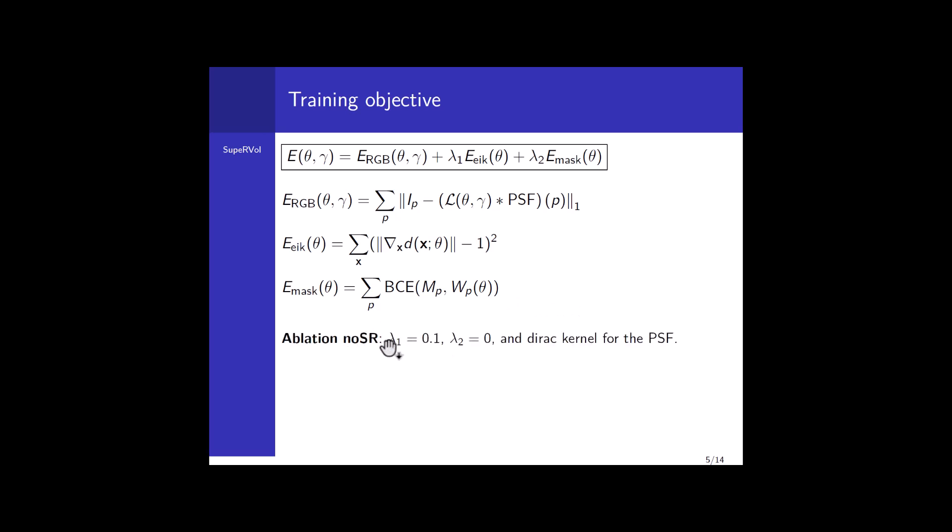We consider two versions of our framework: one ablation called no-SR, and our full framework with a Gaussian kernel for the PSF. For our full framework, we decided to incorporate this optional mask loss to reduce significantly the computational cost. For this reason, we use no-SR to obtain the masks and to initialize the geometric and material parameters. In the case of no-SR, since we don't consider any mask and need to model the background in some way, we make use exactly of the same trick as in NeRF++, considering a neural radiance field specific for the background.